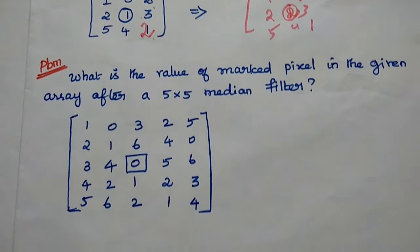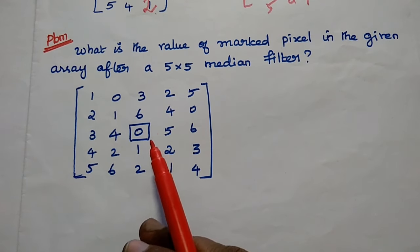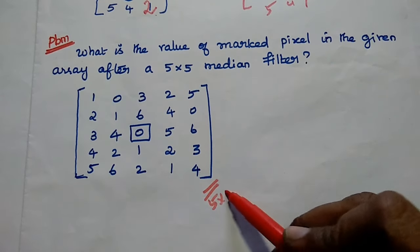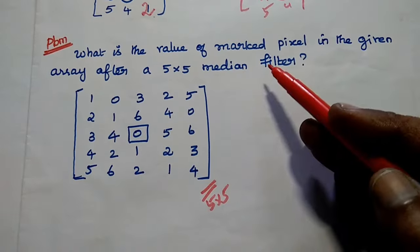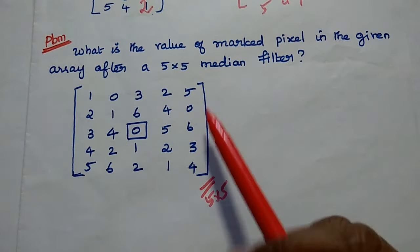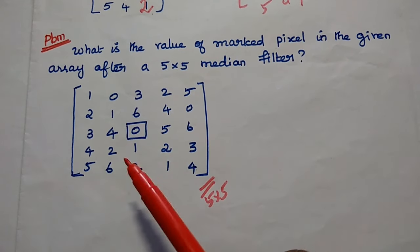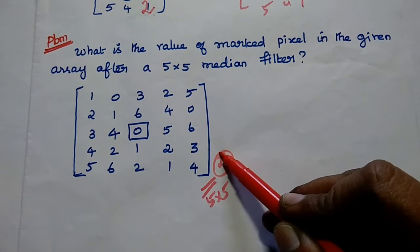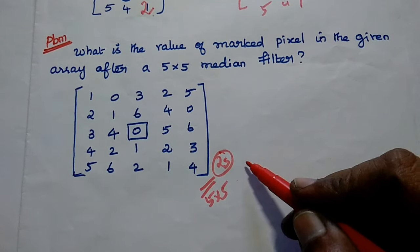Let's solve a small problem. What is the value of the marked pixel in the given array after applying a 5x5 median filter? The given segment itself is a 5x5 image segment, so we are going to use a 5x5 median filter, considering all 25 pixel values within the segment.